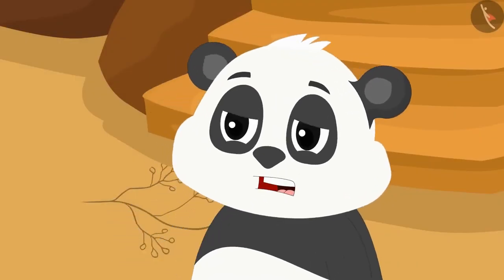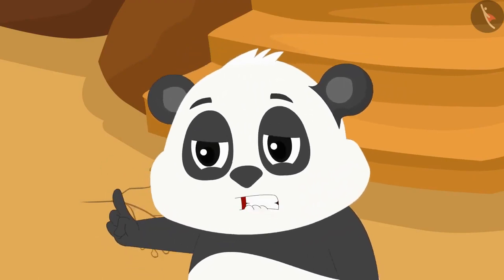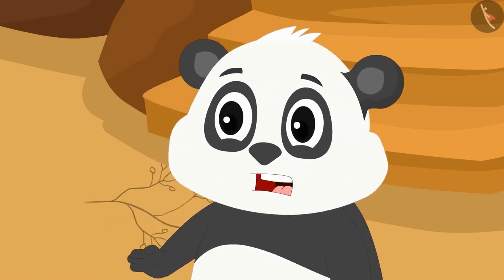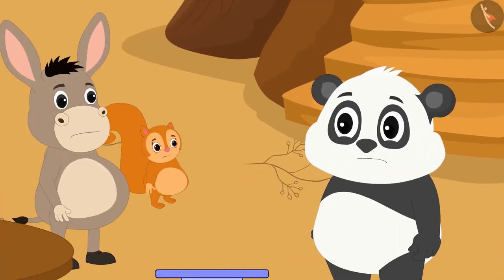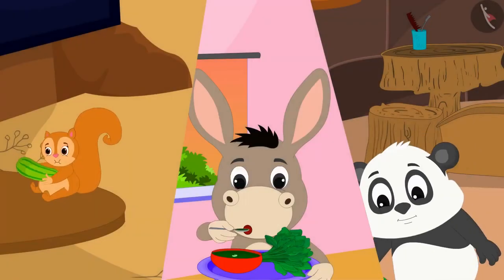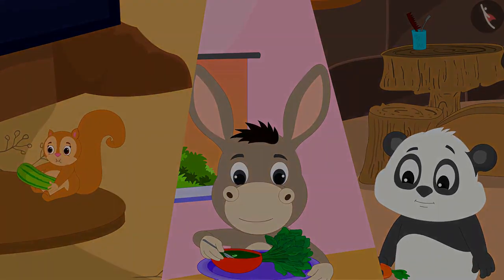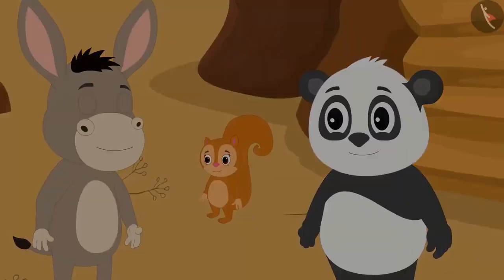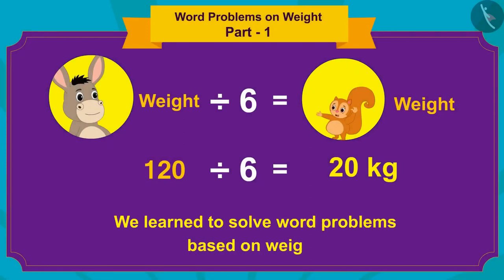The three of us have gained so much weight. From now on, we will eat only nutritious things and completely stop visiting fast food stalls. The three friends started eating nutritious things and slowly started losing weight. In this video, we learned to solve word problems based on weight. In the next video, we will see some more interesting examples.